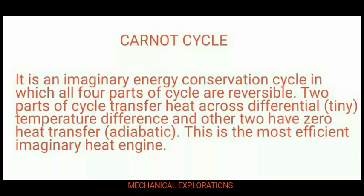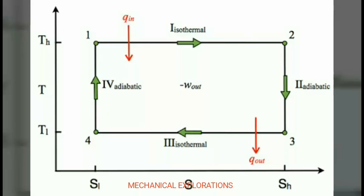Two parts of the cycle transfer heat across a differential temperature — that is a very tiny amount of temperature — and the other two parts have zero heat transfer, where heat H equals zero. This is the most efficient imaginary heat engine.